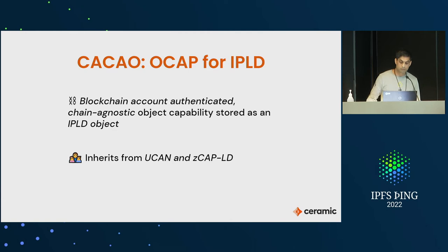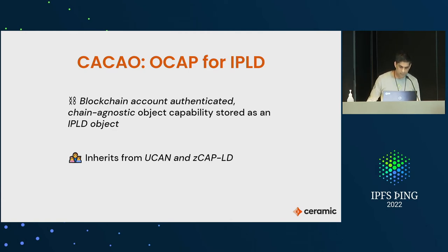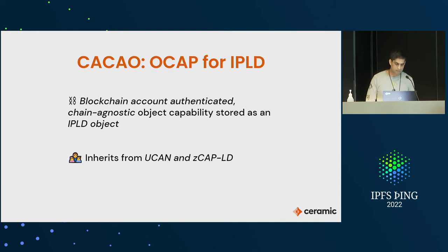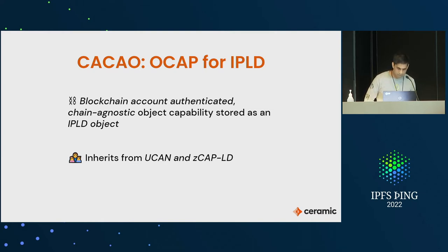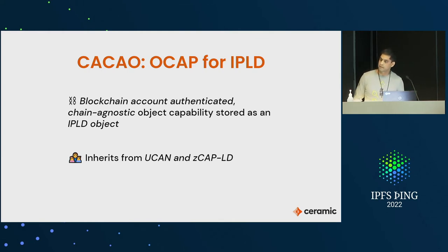This enables an entire universe of Web2 applications to add privacy-preserving features using blockchain accounts. Cacaos can be deterministically serialized into IPLD using CBOR, and it does inherit from UCAN and ZCAP-LD — I'll show which particular pieces.